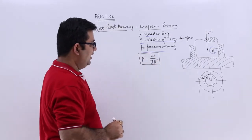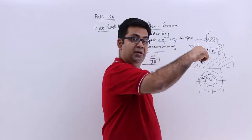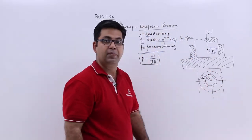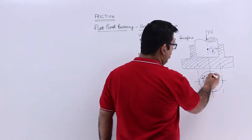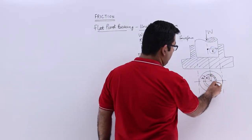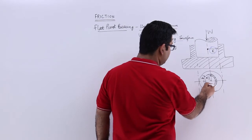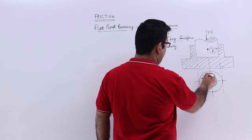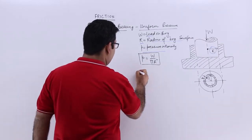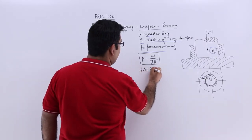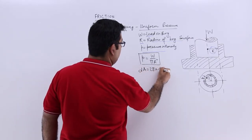Now let us say if you look at it from the top, the shaft would look like this. And let us say we take a small ring of radius r, small r, and the thickness of this ring is d small r. So the area of this ring is dA, which is 2 pi r into dr.